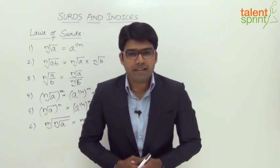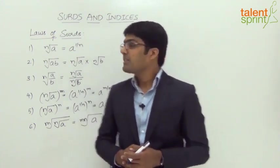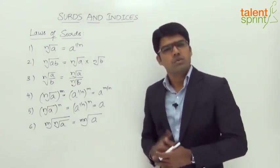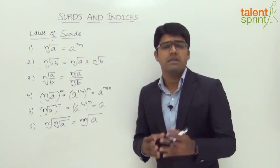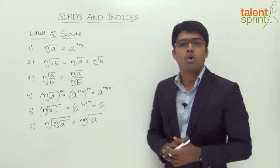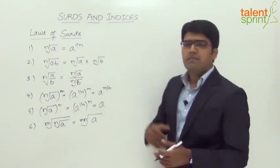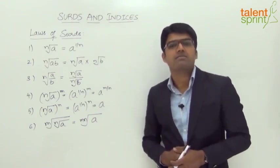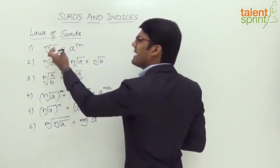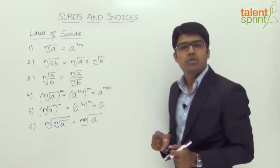Now that we have already looked at the laws of indices, let's quickly run through the rules of surds. As you can see, we have six rules on the board which come in handy while simplifying questions based on surds. Rule number one says: the n-th root of a can be expressed as a to the power of 1 by n. We have already covered this under the definition of surds. Here, n is known as the radical power, this is the radical sign, and a is a positive integer.